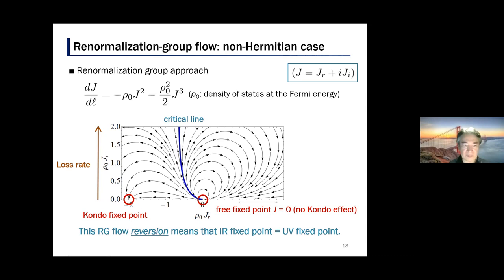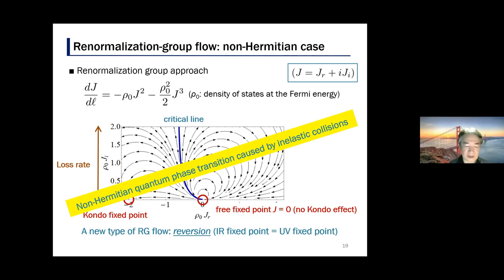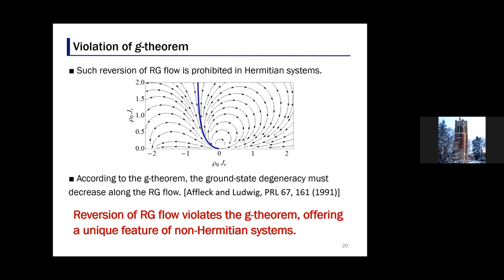If the atomic loss is above a critical point, then the RG flow traces a loop and returns to the free fixed point. Physically, this implies that the Kondo singlet is not formed. This reversion of RG flow means that infrared fixed point coincides with the ultraviolet fixed point. We thus obtain a non-Hermitian quantum phase transition that is caused by inelastic collisions. Such reversion of an RG flow is prohibited in Hermitian systems.